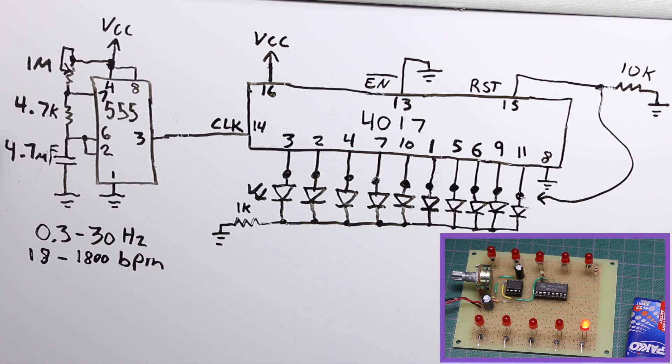So trying to use common part values, I used a 555, and with these resistor capacitor values, I can change this clock rate between 0.3 Hz all the way up to 30 Hz. Or, if I want to convert this to minutes, there's 60 seconds in a minute, so I multiply by 60, and I can control this between about 18 and 1800 beats per minute.